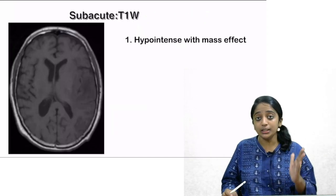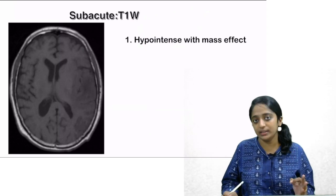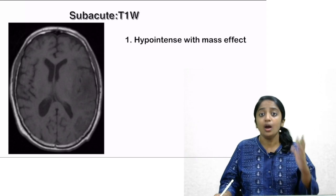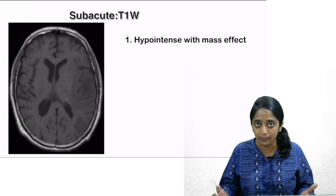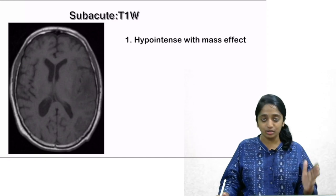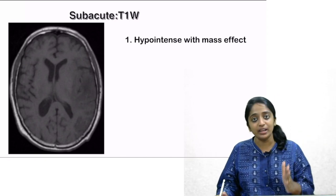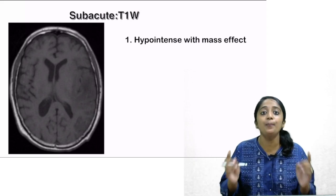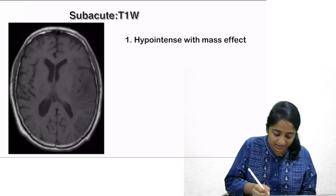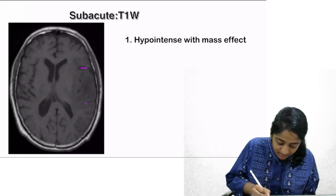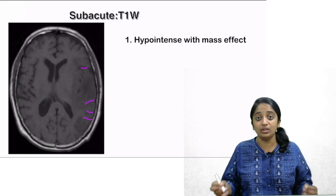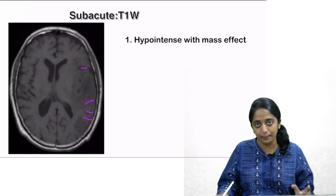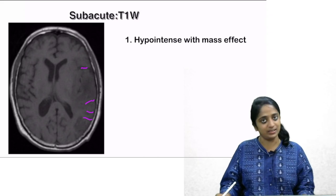In subacute infarct, what do you expect in T1-weighted imaging? Three things. First, you can expect hypointense areas with mass effect. Why hypointensity? It is due to vasogenic edema. To begin with, you had cytotoxic edema; now, with breakage of the blood-brain barrier, you are going into vasogenic edema. So it appears hypointense in T1. The mass effect is seen as cortical sulci being effaced — the brain parenchyma is swollen and hypointense.